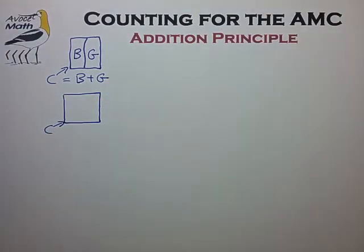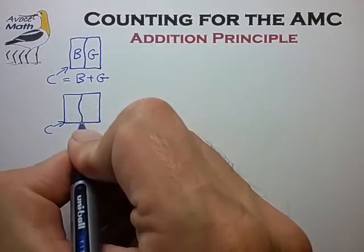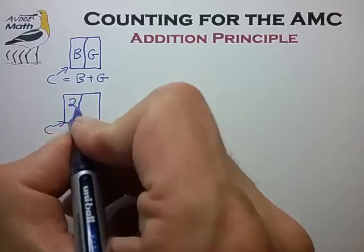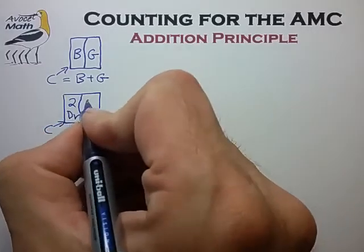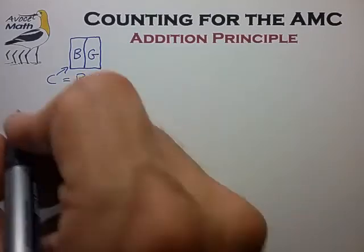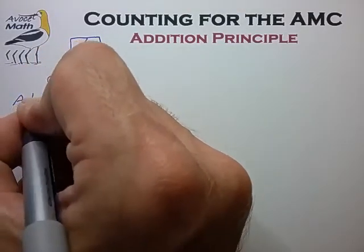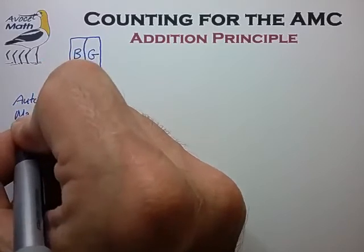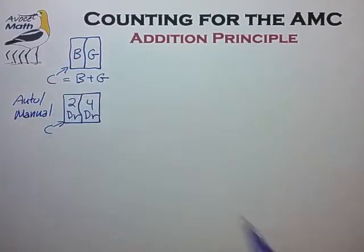We could try to divide our car lot into two non-overlapping subsets, and there are a couple of choices. One such choice is to divide the car lot into two-door cars and four-door cars. Another possibility is to divide it into automatic transmission and manual transmission cars.